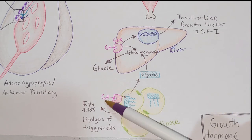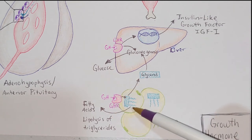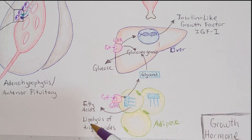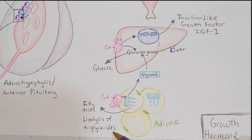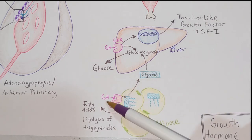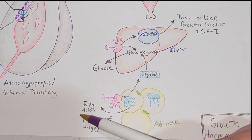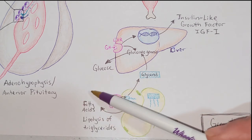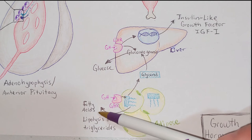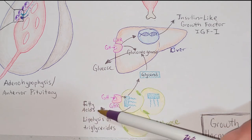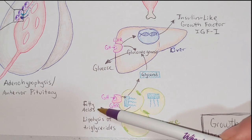In response to growth hormone binding to its receptor, lipolysis — the breakdown of triglycerides — is going to be stimulated. Growth hormone triggers the release of fatty acids into the bloodstream, and therefore the body's tissues can have a ready source of energy to take into their cells and ultimately fuel their cellular processes.